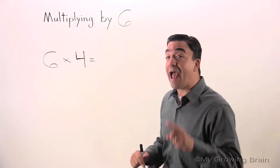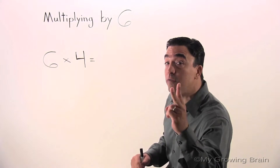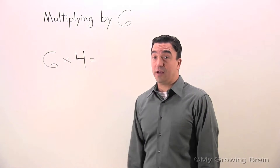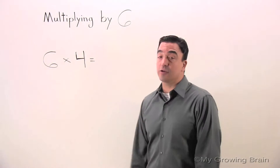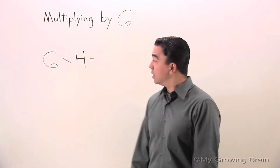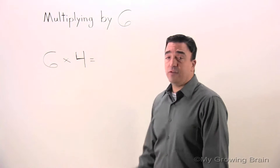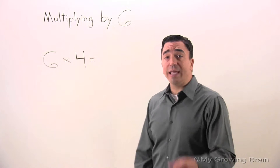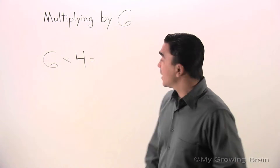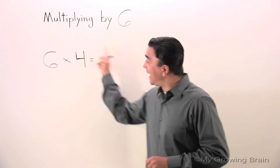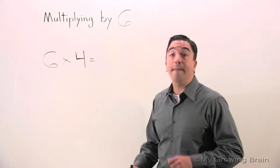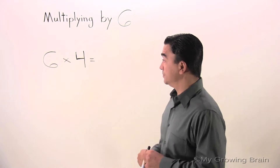On the board, you'll notice I have two factors: a factor 6 and a factor 4. If you multiply these two factors, you're going to get the product. The product is the answer to a multiplication problem.